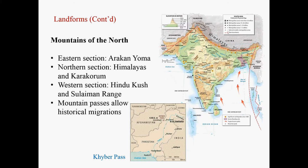Mountains of the north. We can divide these mountains into three sections. The eastern section — the mountain here is called the Arakan Yoma. This mountain separates South Asia from Southeast Asia.